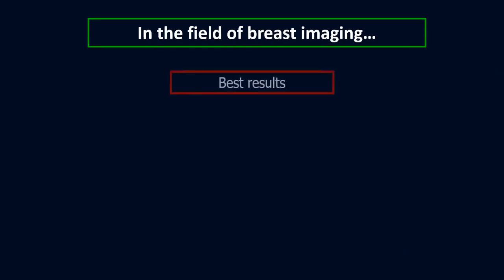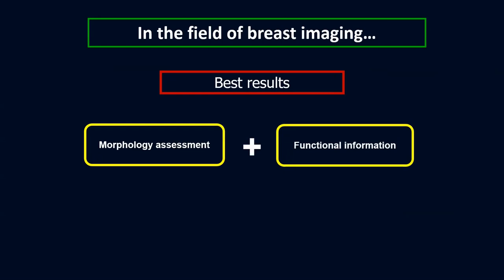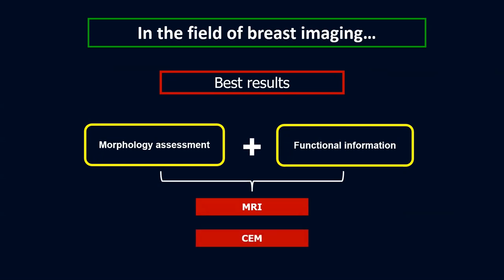In general, in the field of breast imaging, the breast results are usually obtained from modalities which can combine morphology assessment together with functional information. Until recently, it was only MRI that could provide both, and that's why MRI has long been considered a breakthrough in breast imaging. But now, having contrast mammography in use with the same pathophysiological pathway as MRI, it is now competing with MRI in breast imaging.